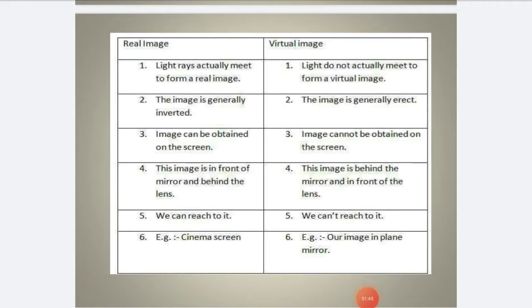In a real image, light rays actually meet to form the image. In a virtual image, light rays do not actually meet to form the image. Second, a real image is generally inverted. Second, a virtual image is generally erect. Erect means straight, inverted means upside down. A real image can be obtained on a screen.